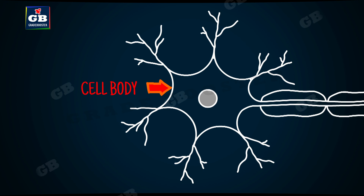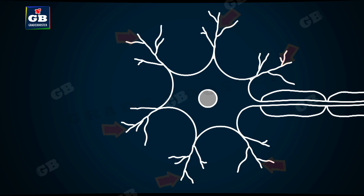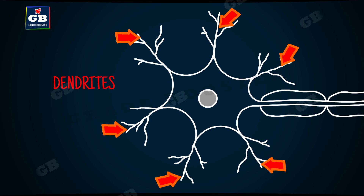This is the cell body of the neuron. We can observe a nucleus in the cell body. The cell body has a nucleus, and we can also observe some branches that are arising from the cell body.